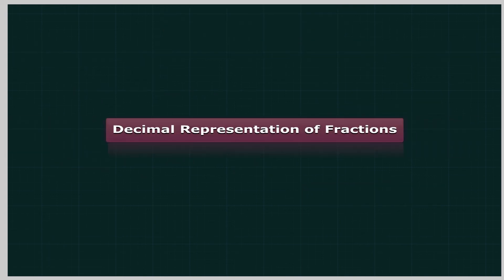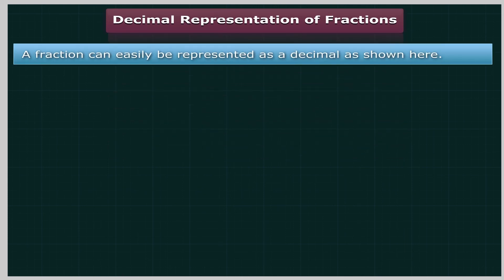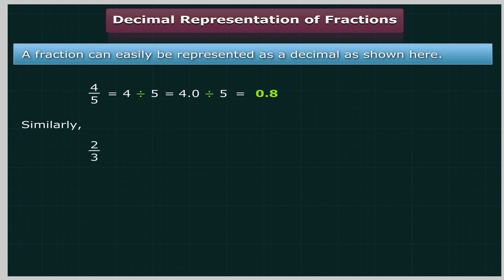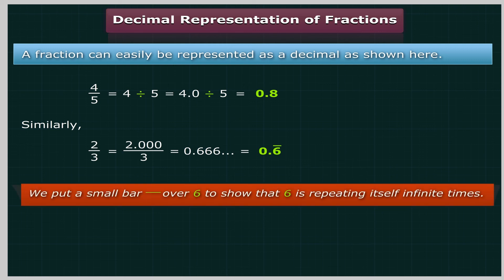Decimal Representation of Fractions: A fraction can easily be represented as a decimal. For example, 4 upon 5 equals 4 divided by 5 equals 4.0 divided by 5, which equals 0.8. Similarly, 2 upon 3 equals 2.000 divided by 3, which equals 0.666..., written as 0.6̄ — we place a small bar over the 6 to show that 6 repeats infinitely.